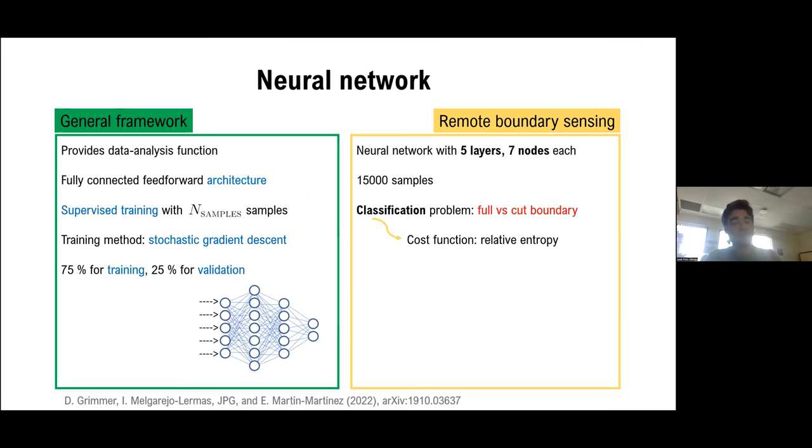And the second ingredient of the general framework is the neural network. The neural network in our case is going to be fully connected feed forward in its architecture, and it's in charge of providing the data analysis function. In order to do that, we use supervised training. And we do that training with a certain number of samples, which in our example was 15,000. The training method is the standard one, stochastic gradient descent, and we used, in order to train the network, 75% of the data we had, and we left the 25% for validation. In our example we had a classification problem. We had to distinguish between two different possibilities for the boundary. And as a consequence, we used as a loss function the relative entropy between the predictions of the neural network and the actual results that we knew were the ones that the neural network should identify.